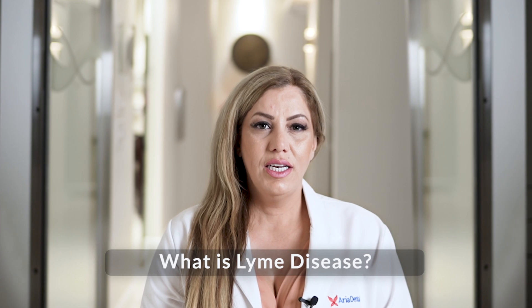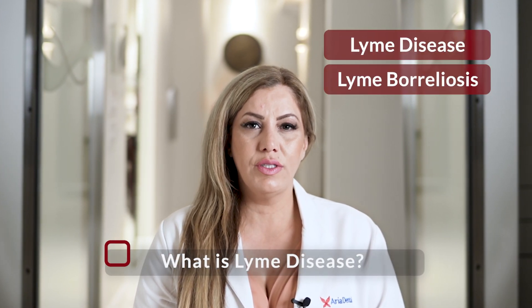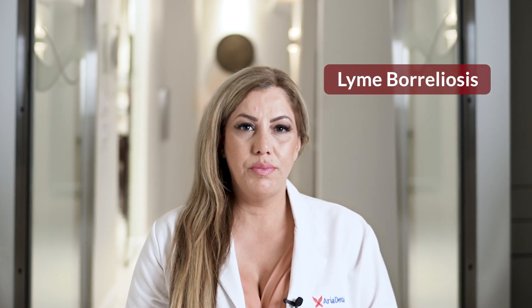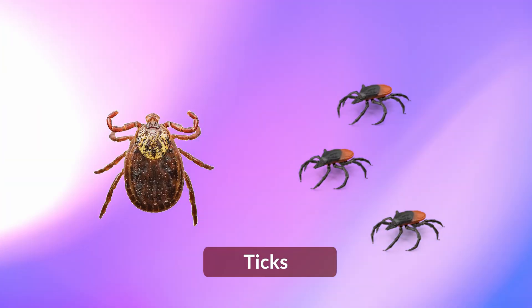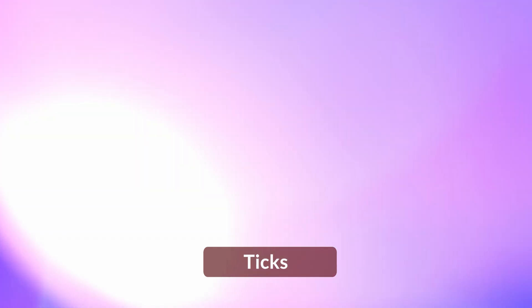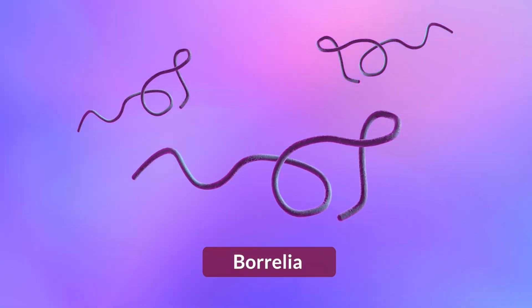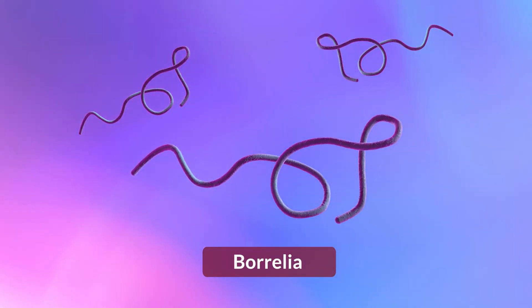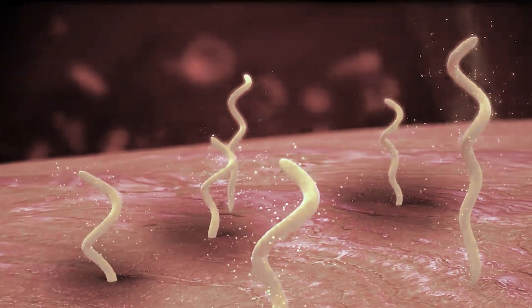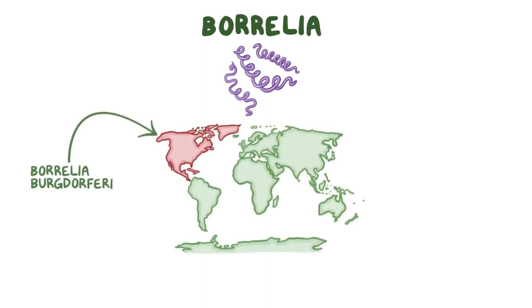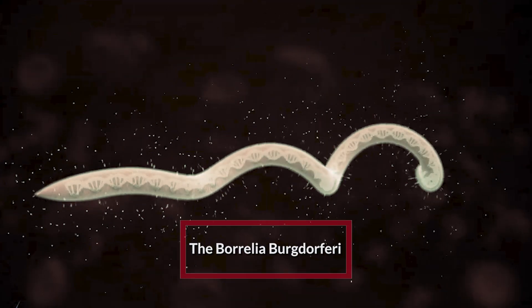What is Lyme disease? Lyme disease, or Lyme Borreliosis, is an infectious bloodborne bacterial disease that's transmitted by ticks, and it is caused by spirochete bacteria called Borrelia that can spin and twist in a wave-like motion and live in a very low oxygen environment. Borrelia contains several different species, but in North America, Borrelia burgdorferi is the primary cause of Lyme disease.